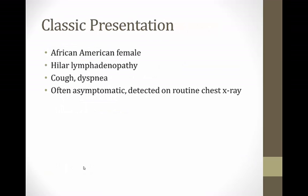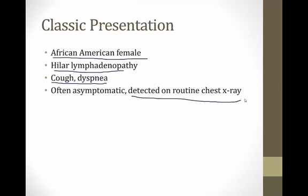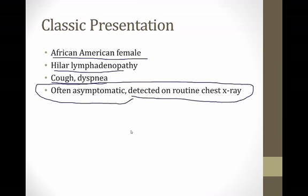The classic board presentation of sarcoid involves an African American female, usually a younger patient in their 30s or 40s — the most common demographic, though in practice sarcoid appears in a wide range of patients. There will be hilar lymphadenopathy on the chest X-ray, with symptoms of cough and dyspnea. Another common presentation is an asymptomatic patient with hilar lymphadenopathy found incidentally on a routine chest X-ray.